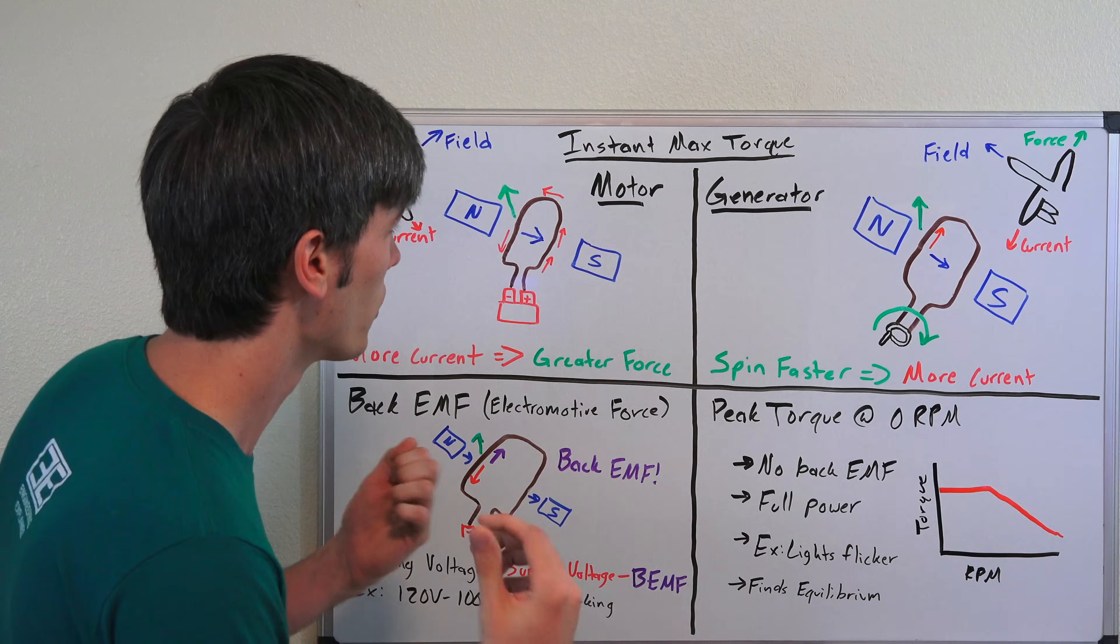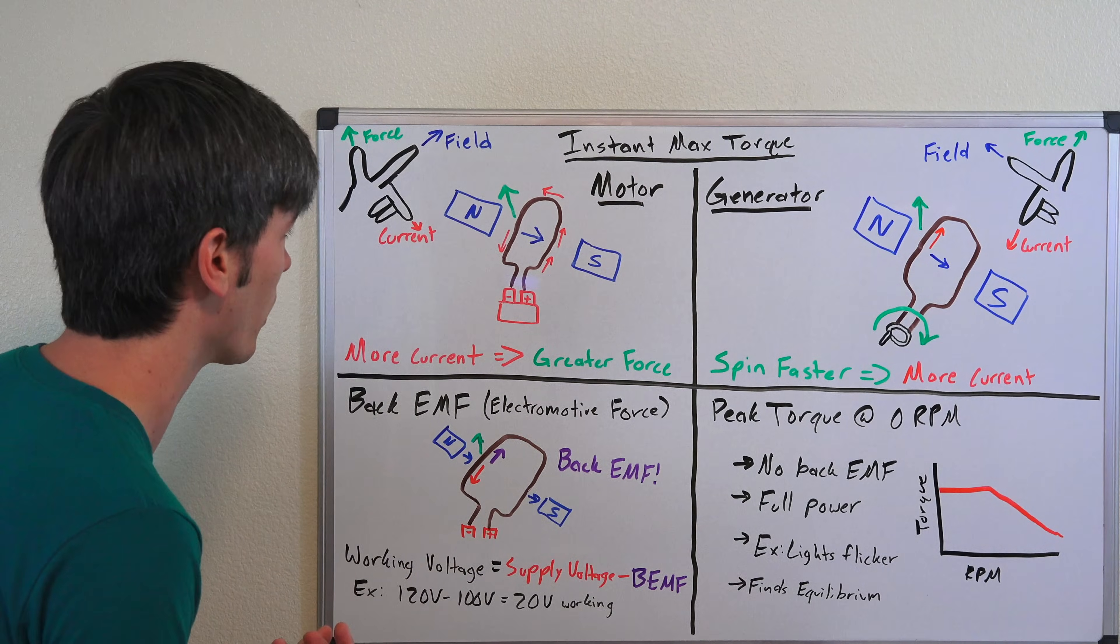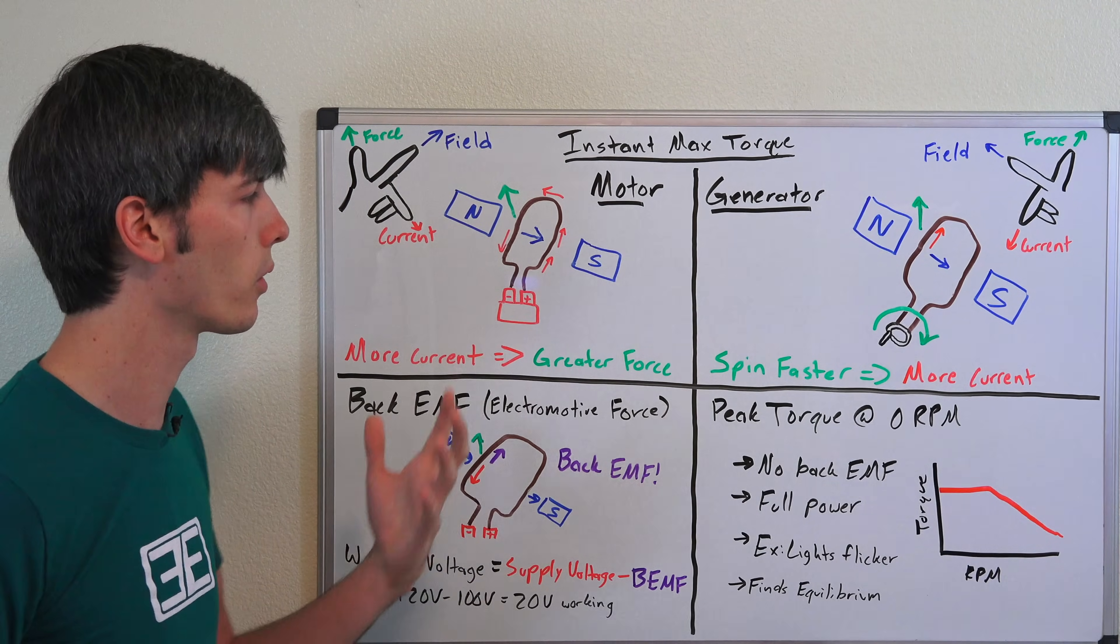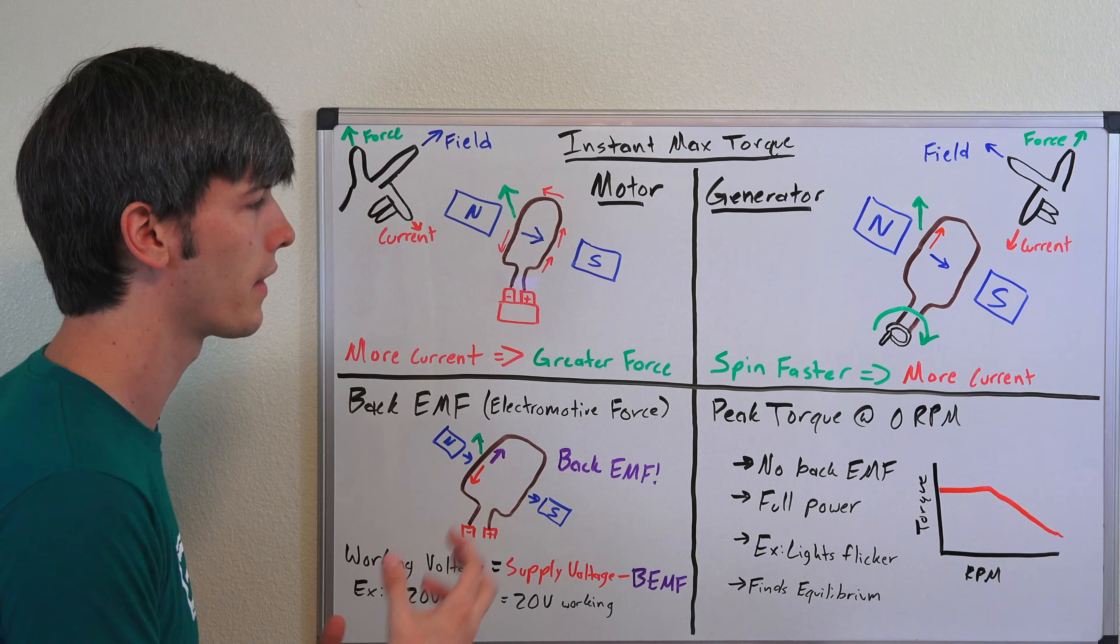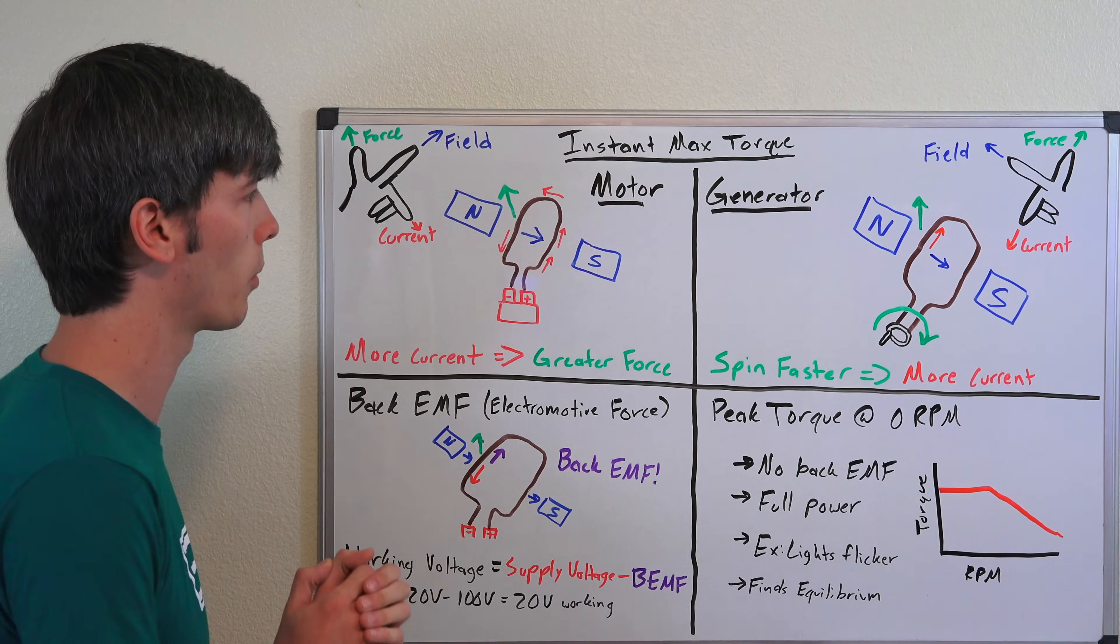So how are they able to do this? Well, basically we're going to talk about motors, generators, and then get into why that peak torque is available at zero RPM.